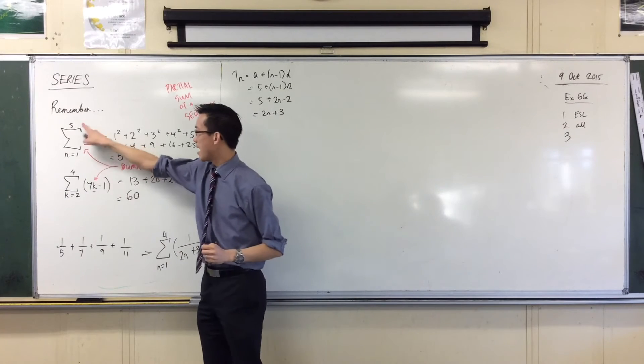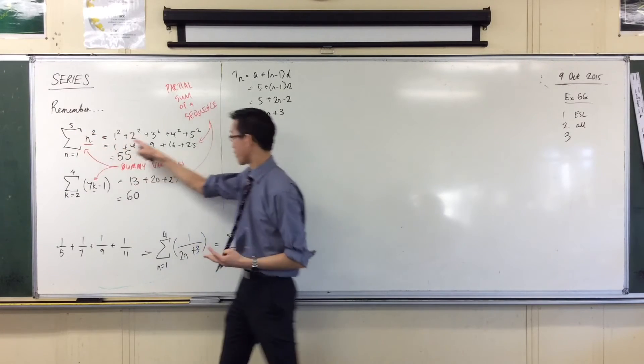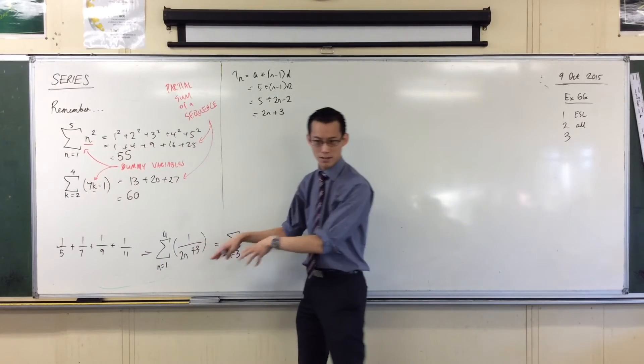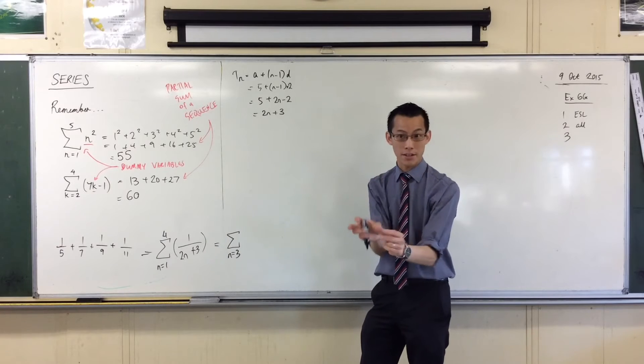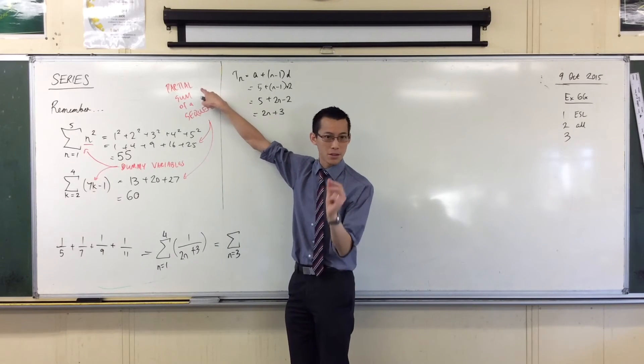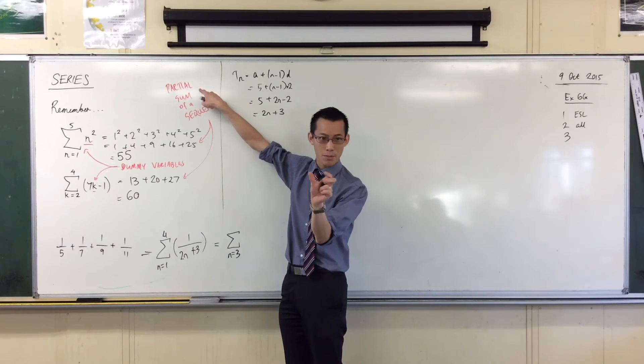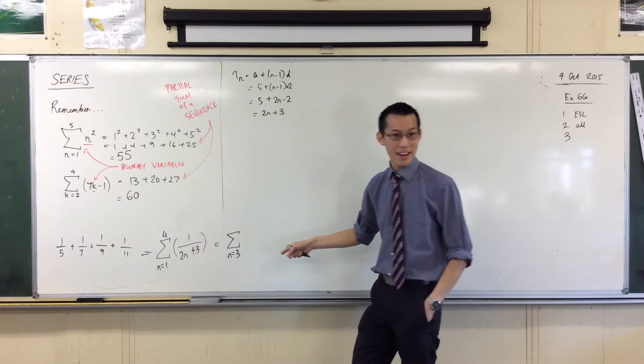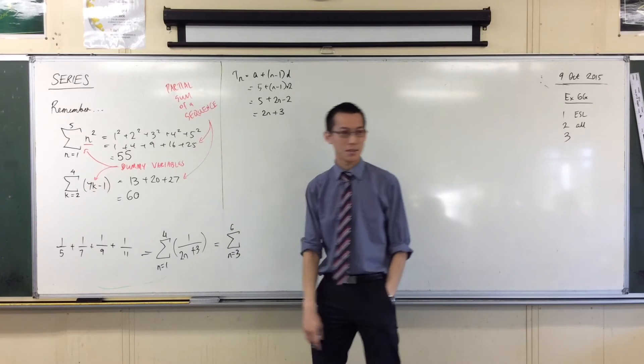Look, when I did 5 take away 1, that's 4, but there are 5 terms. When I did 4 take away 2, that's 2, but there are 3 terms. Just, what's these off by 1 errors? They creep up on us a lot, especially when you're working out a partial sum. They'll say, I want this number of terms, and if you go plus 1 or minus 1, it changes the sum, doesn't it? I'm going to end at n equals 6, so 3 is 6, okay?